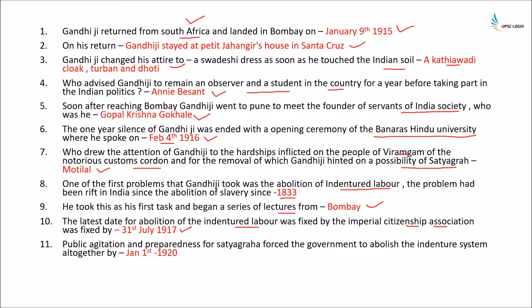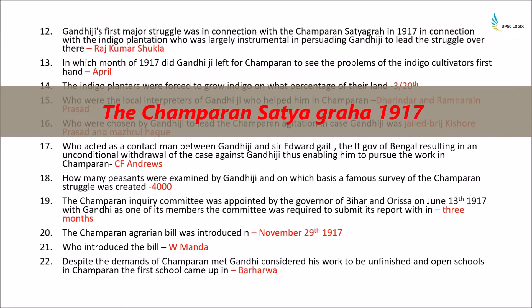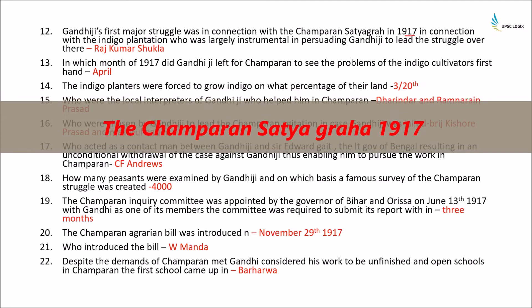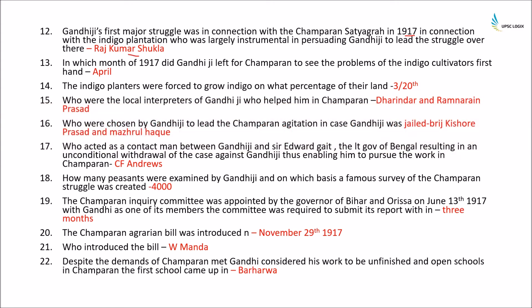The last date for abolition of indentured labour was fixed by the Imperial Citizenship Association on 31st July 1917, but they did not actually abolish it. Public agitation and the threat of Satyagraha forced the government to abolish the indentured system altogether on January 1st, 1920. Gandhiji's first major struggle was the Champaran Satyagraha in 1917, and it was Rajkumar Shukla who drew Gandhiji's attention to the indigo plantations.